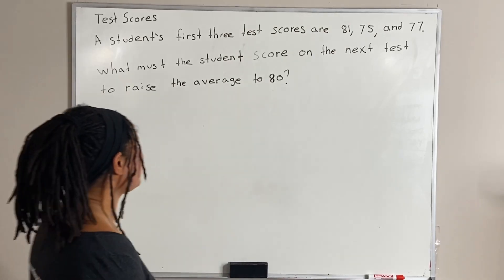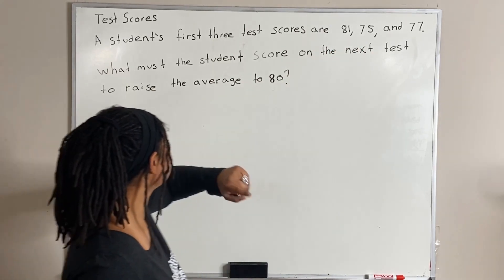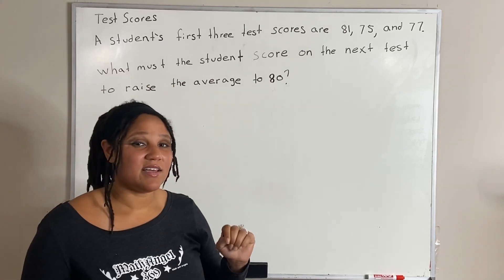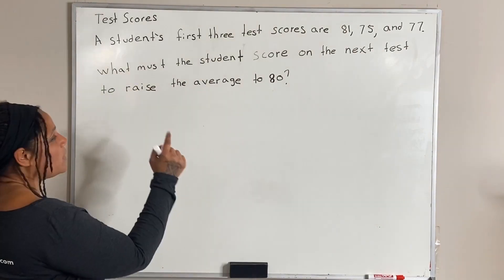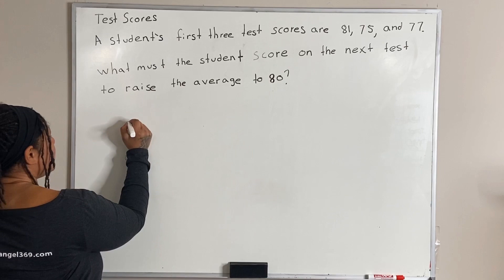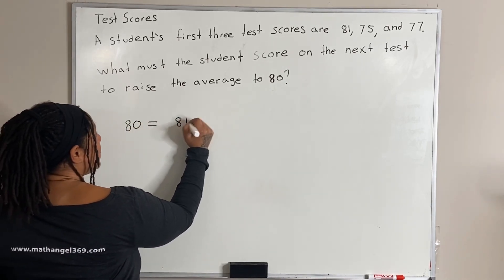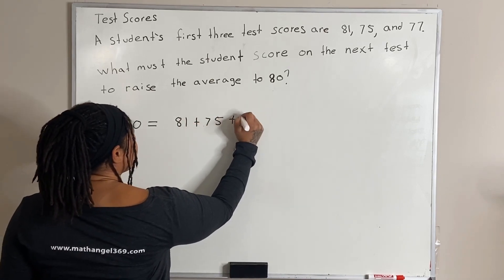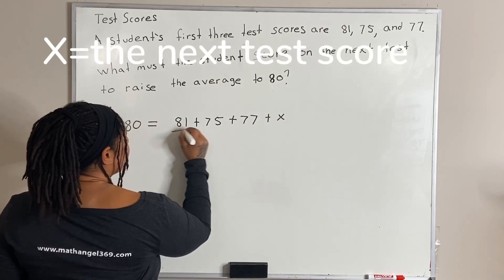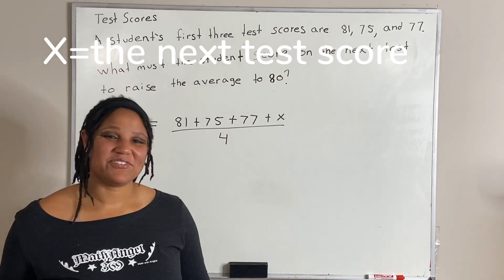Okay, so let's work this problem. We have a total of 1, 2, 3, 4 test scores. But the fourth one is unknown. So, we want to raise the average to 80. So, we want to set 80 equal to 81 plus 75 plus 77 plus x all over 4. And then we solve for x.